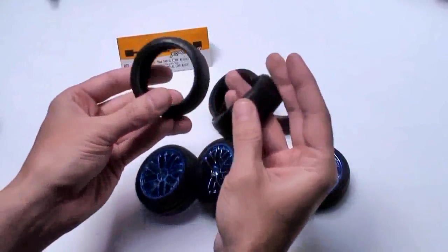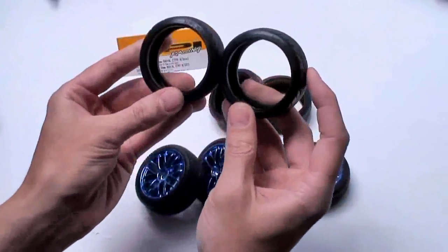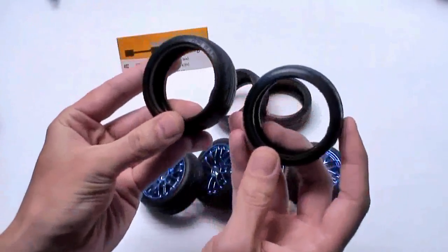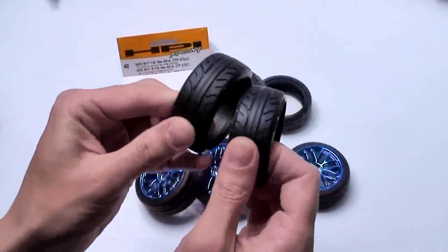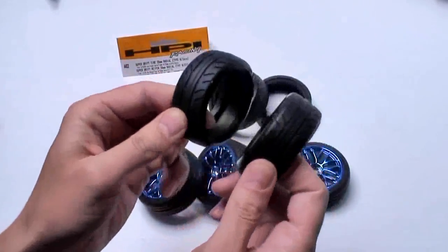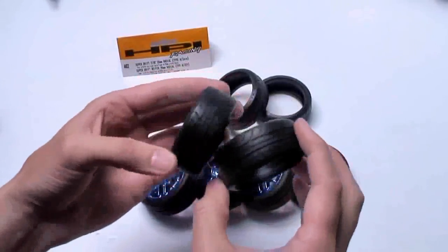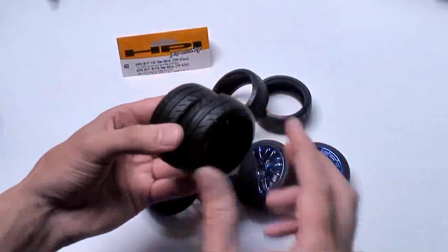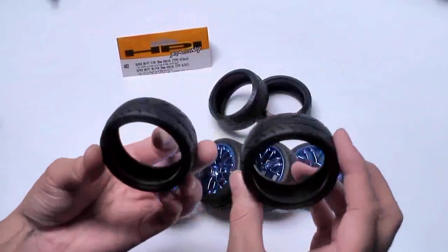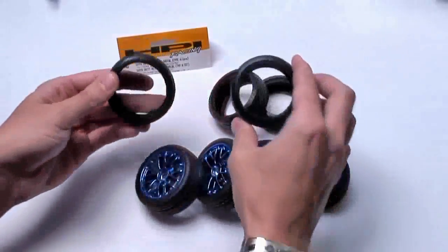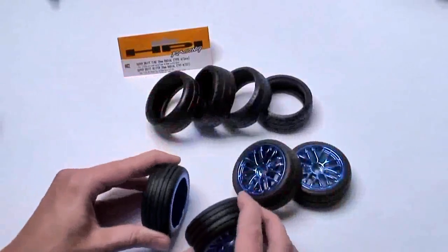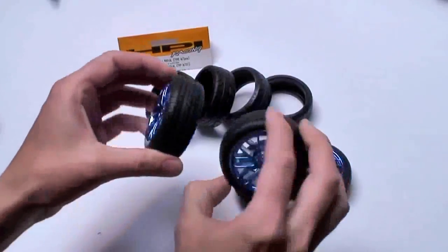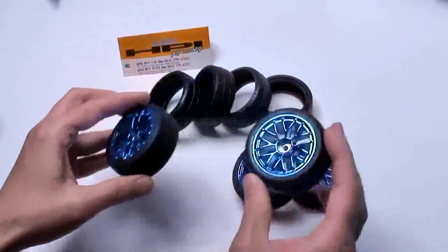These HPI super drift tires, they're 26 millimeters. You can hear the difference big time on that. They're a harder compound. They're not really a rubber, they're more of a plastic. So these under great power are going to just basically slip and give me that drift that I'm looking for. Whereas these ones here are full of grip right, they're being rubber. You can hear that right there. So that's a good indication of how sticky these are.